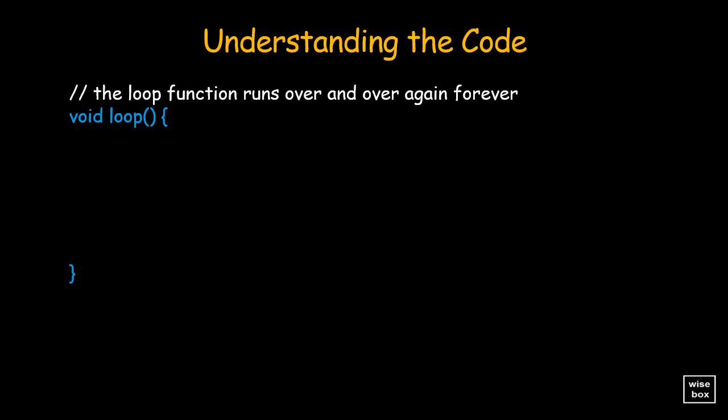Within the loop, we use the function digitalWrite to write a high or low value to a digital pin. In this case, in the main loop, you turn the LED on with this line. This supplies 5V to the LED anode. That creates a voltage difference across the pins of the LED and lights it up.